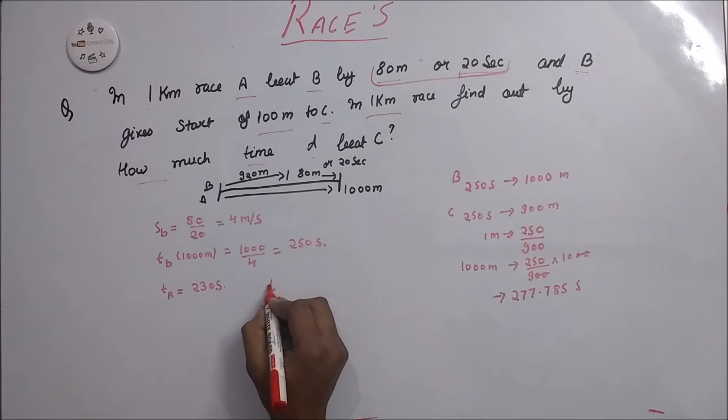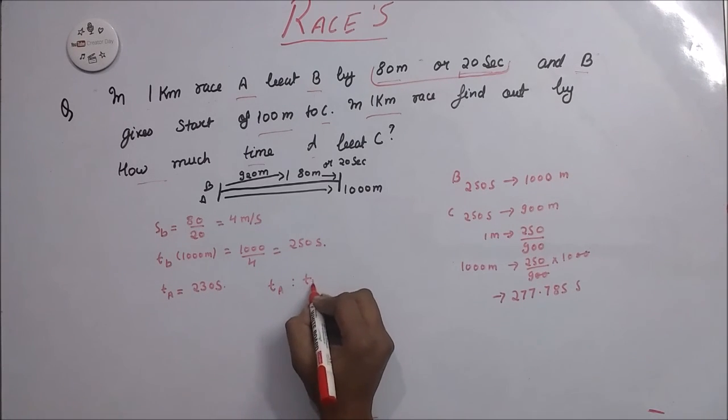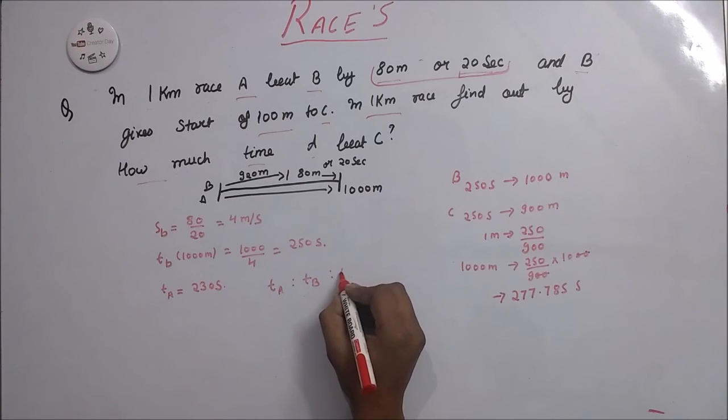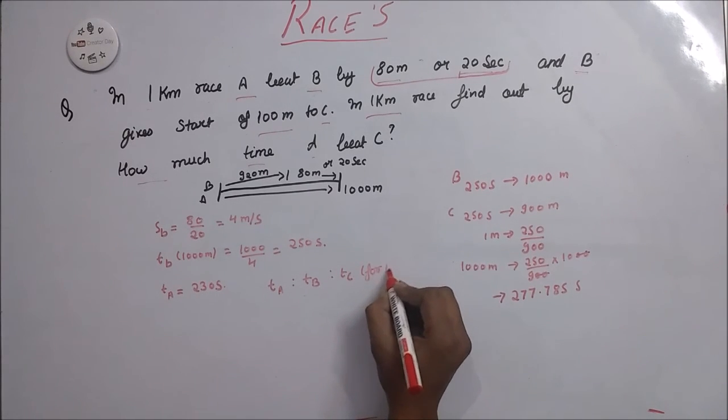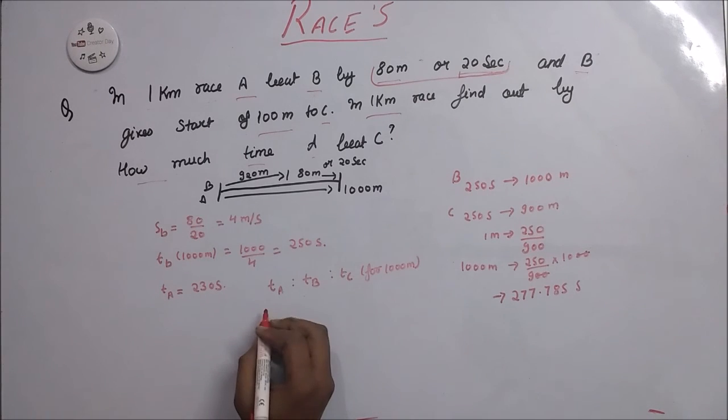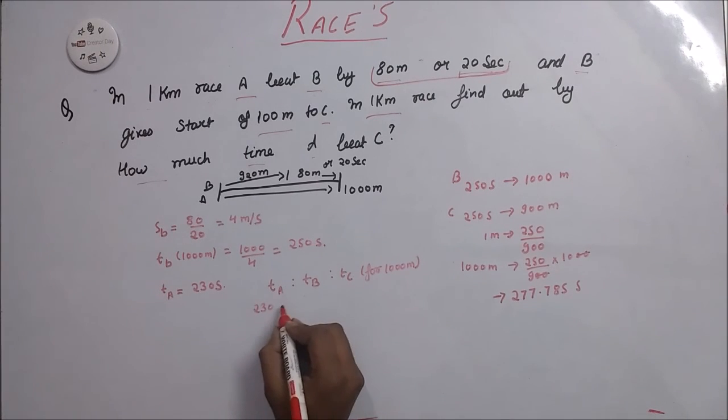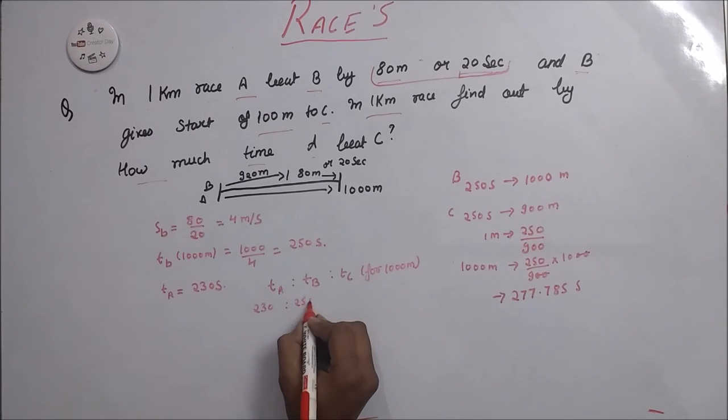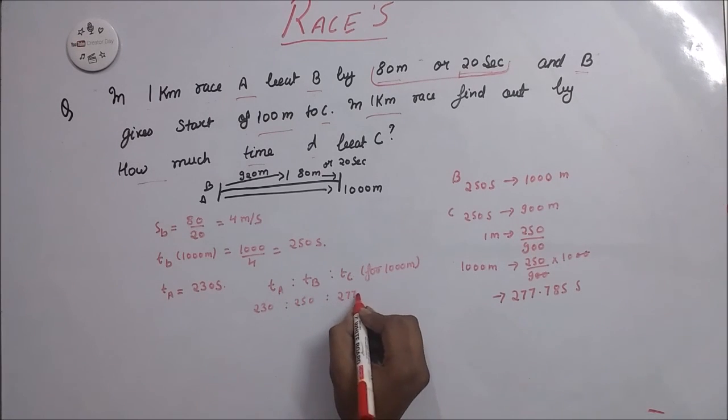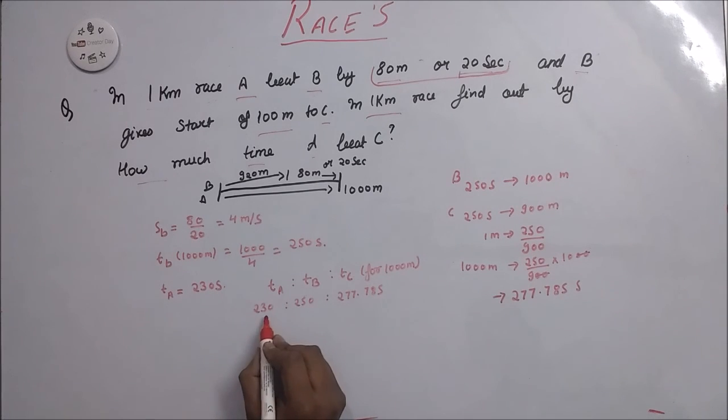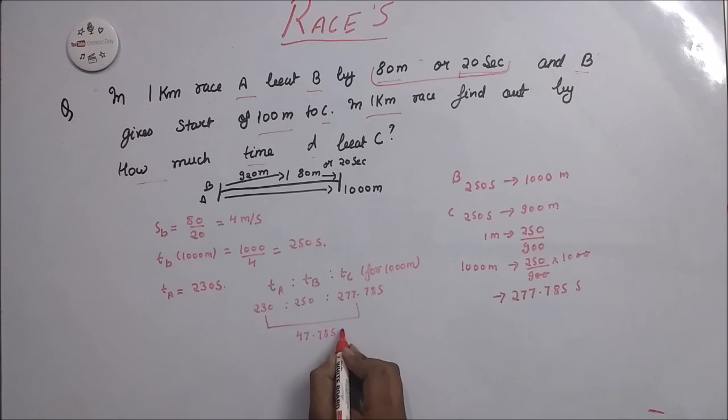Now we take TA ratio TB ratio DC for 1000 meters. It is 230 ratio 250 ratio 277.785. From this we calculate 47.785 seconds. This is the time by which A beats C. This is your answer.